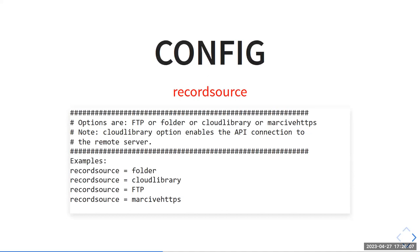In the config there's a thing called record source. The options are FTP, folder, Cloud Library, or Markive HTTPS. Some examples: record_source equals folder, et cetera. There's also some extra sauce for Cloud Library.